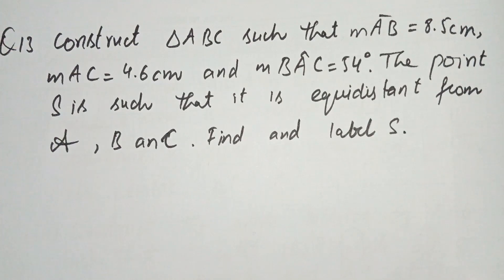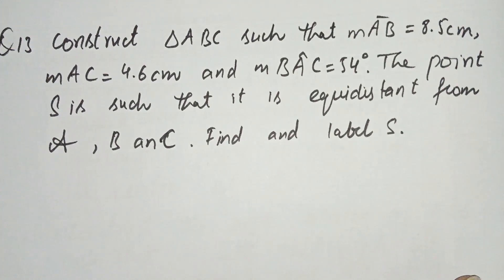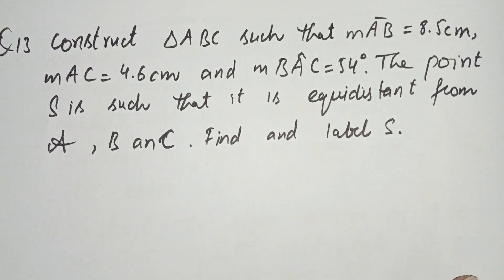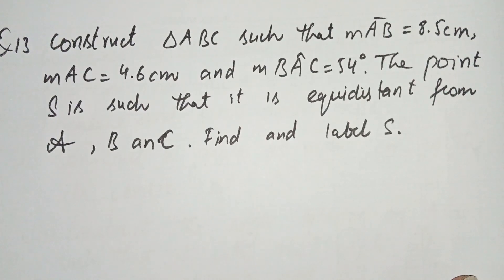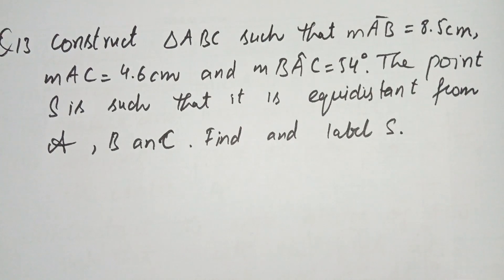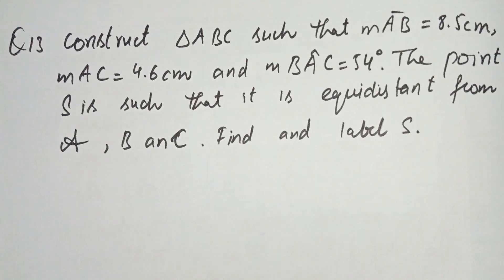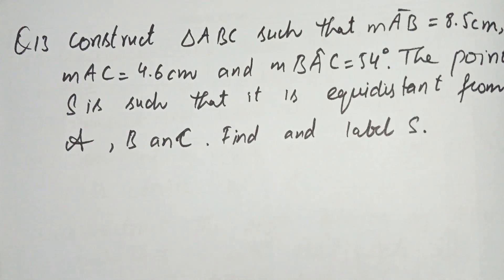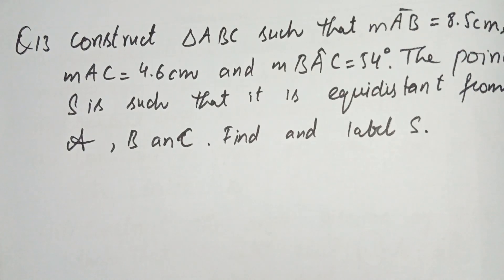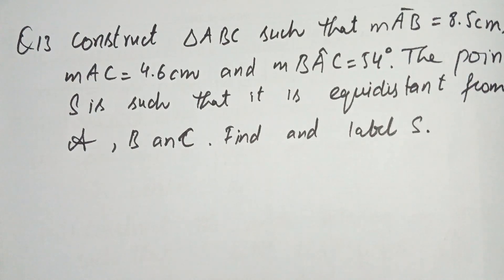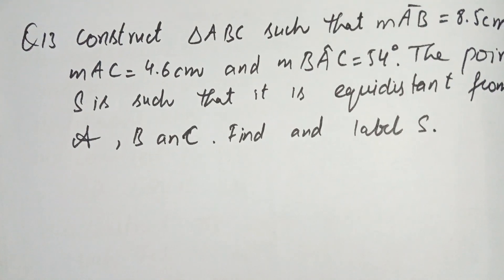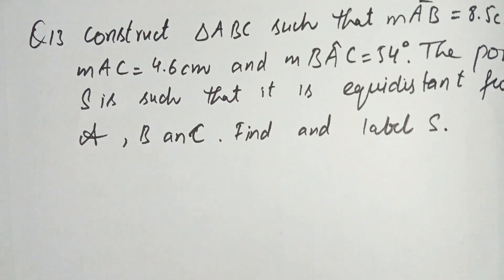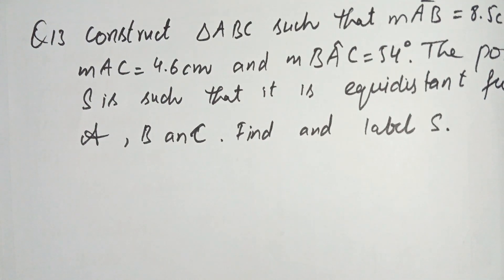Now question number 13: Construct triangle ABC such that AB is 8.5 cm, AC is 4.6 cm, and angle A is 54 degrees. The point S is such that it is equidistant from A, B and C — find and label S. First we construct the triangle ABC, then find the point equidistant from A, B and C by drawing the perpendicular bisector of all three sides. Where they cut is point S.